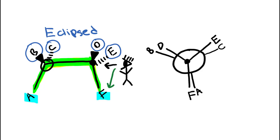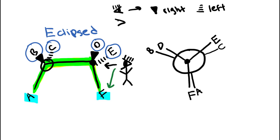And so that's how we draw the eclipsed Newman projection for this molecule. If you're having a hard time, you can use a little shortcut. If cyclops man is looking to the right, wedges are going to be on the right side and dashes are going to be on the left side. If cyclops man is looking in the opposite direction — to the left — wedges will be pointing to the left and dashes will be pointing to the right. The thing to remember is that wedges follow whatever direction cyclops man is looking.